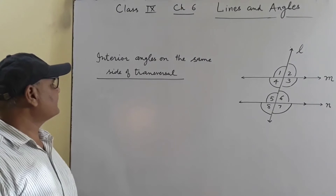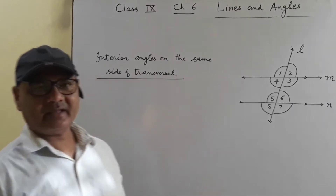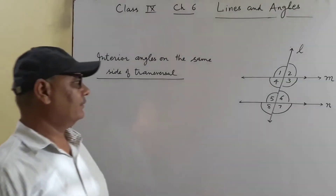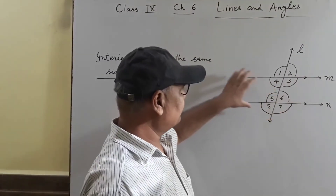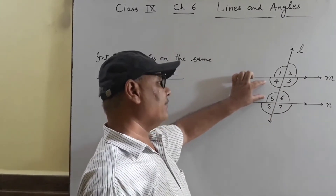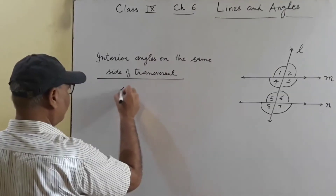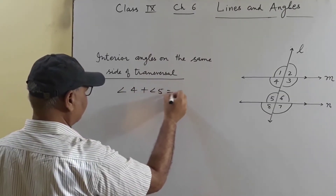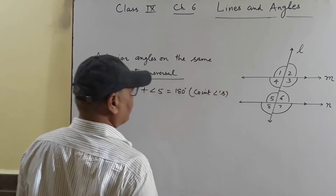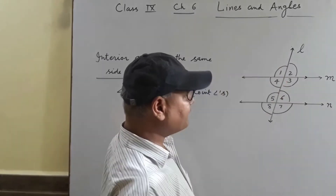Then, interior angles on the same side of the transversal — also called co-interior angles. If lines are parallel, then co-interior angles are supplementary. Angle 4 plus angle 5 equals 180 degrees, and the reason is co-interior angles. Similarly, angle 3 plus angle 6 are also on the same side of the transversal, so angle 3 plus angle 6 also equals 180 degrees.